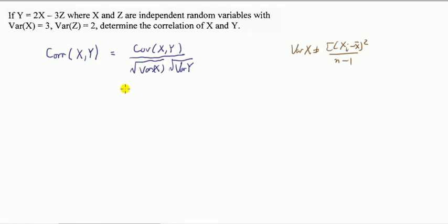So I've got to work out the bottom part - I just have to take the square root of the variance of X (square root of 3) and the square root of variance of Y. I've got to deal with the covariance. Let's look first at the covariance.